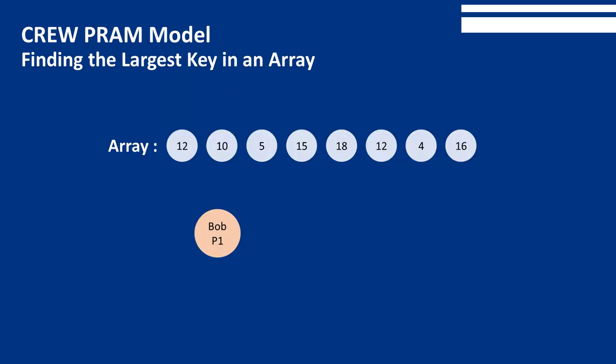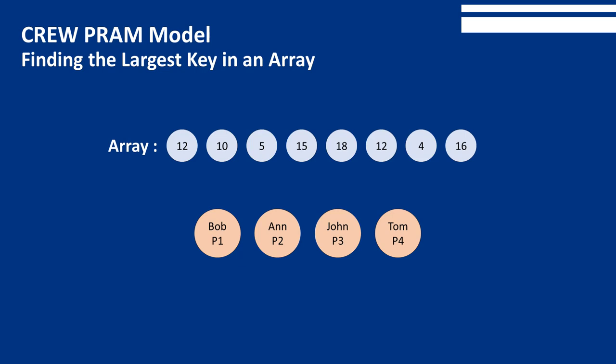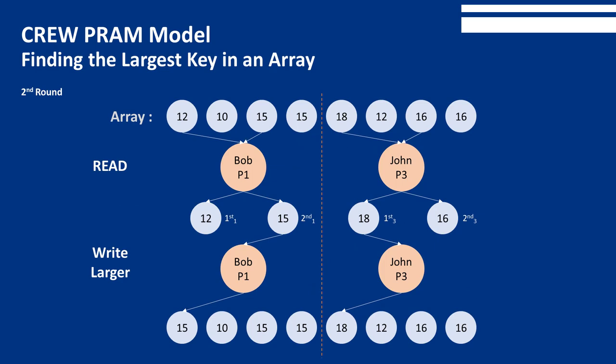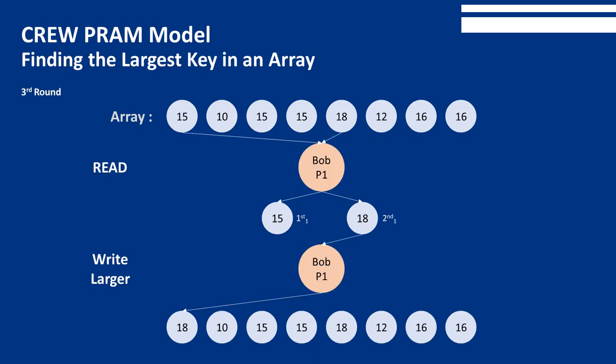For example, suppose you wish to find the largest of eight keys using this method. If you have the help of three friends, each of you can simultaneously determine one of the winners of the first round, meaning the first round can be completed four times as fast. After that round, two of you can rest while the other two perform comparisons in the second round. In the final round, only one of you needs to do a comparison.